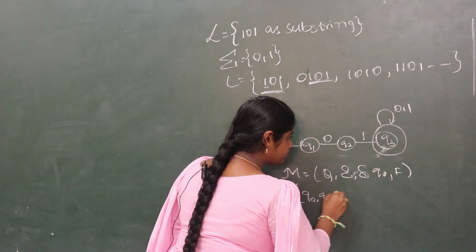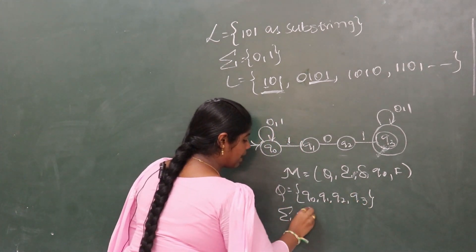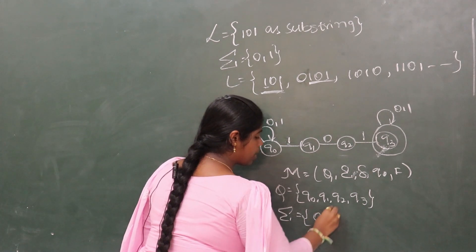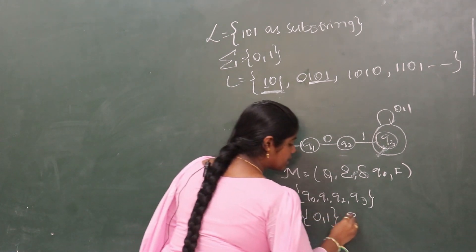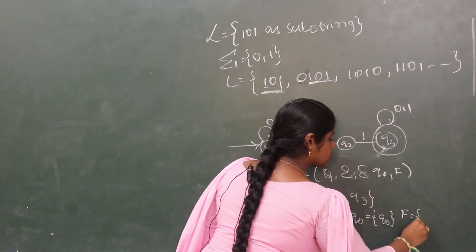The set of states are q0, q1, q2, q3. The input alphabet sets are 0,1. Starting state is q0. Final state is q3.